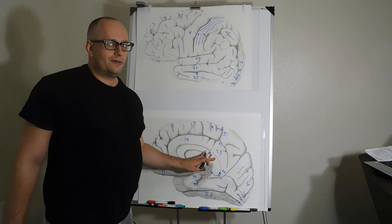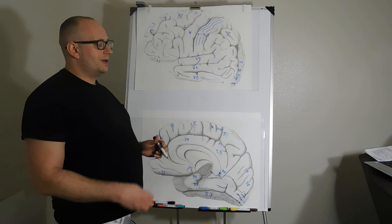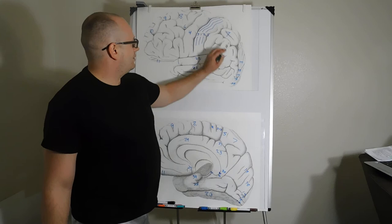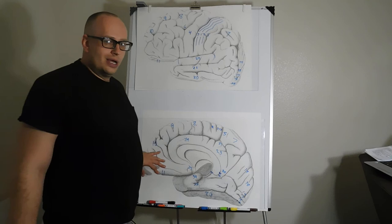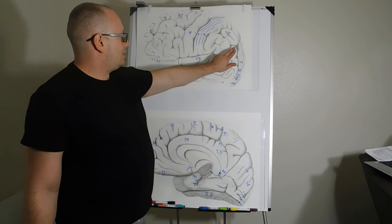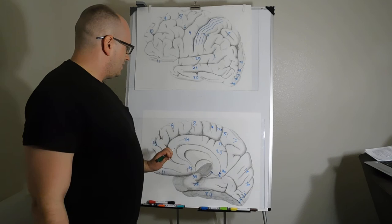Area 31 in the superior posterior cingulate, area 23, and area 30 are all part of the default mode network — the most metabolically active area of the brain when you're not focused on a task. When you think about something from your past, you're using these areas along with the precuneus (area 7), areas 10 and 11, and Brodmann area 39 — the angular gyrus — and the supramarginal gyrus.